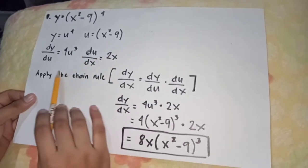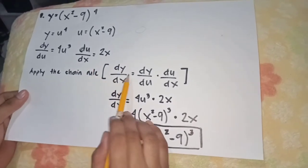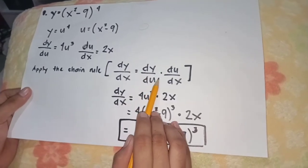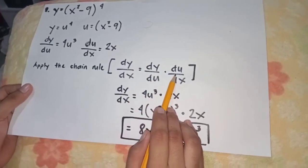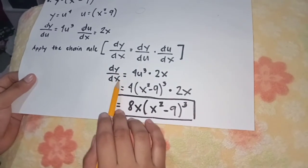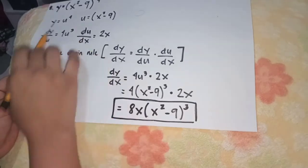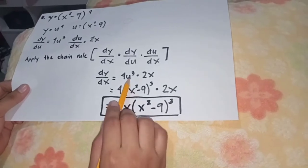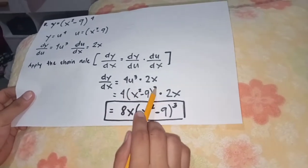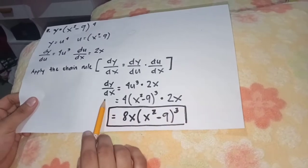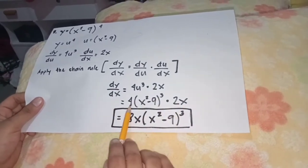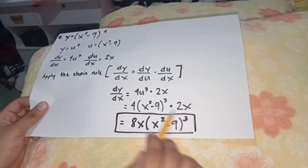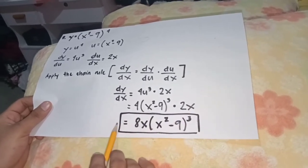The second step is to apply the Chain Rule formula: the derivative of y with respect to x equals the derivative of y with respect to u times the derivative of u with respect to x. So dy/dx = 4u³ × 2x = 4(x² − 9)³ × 2x. Simplifying: dy/dx = 8x(x² − 9)³. So this is our final answer.